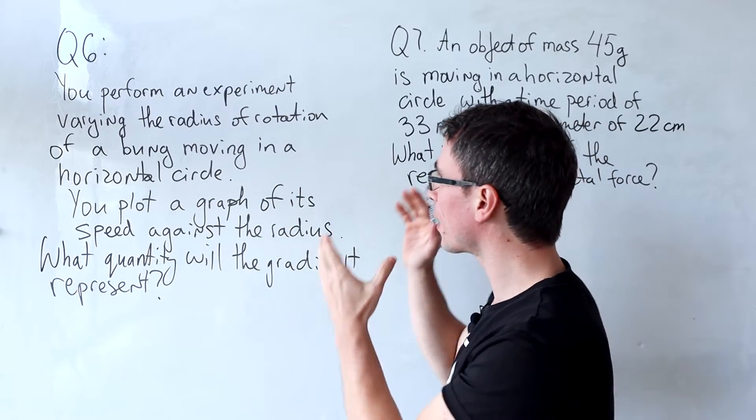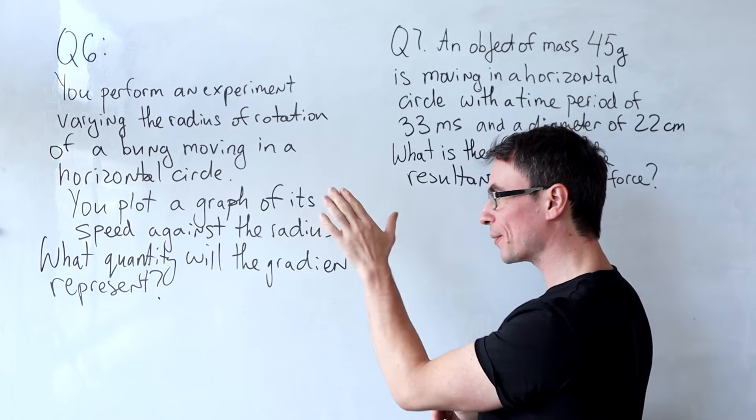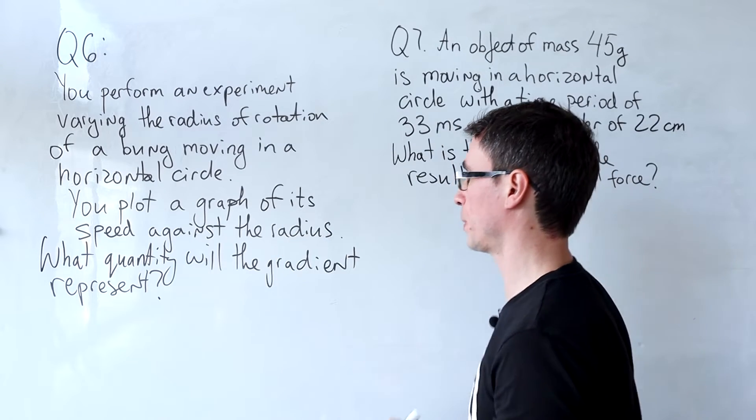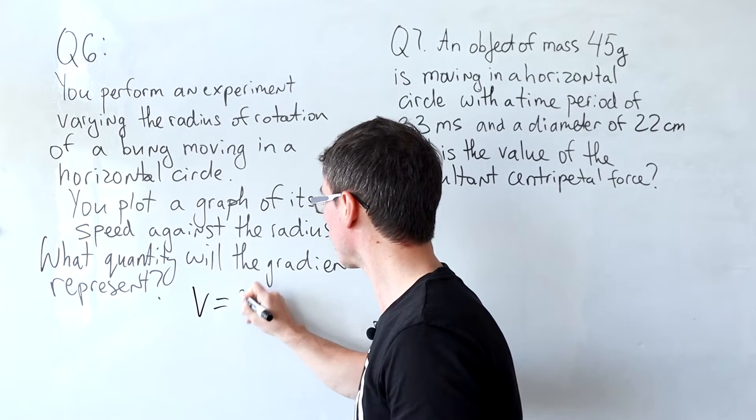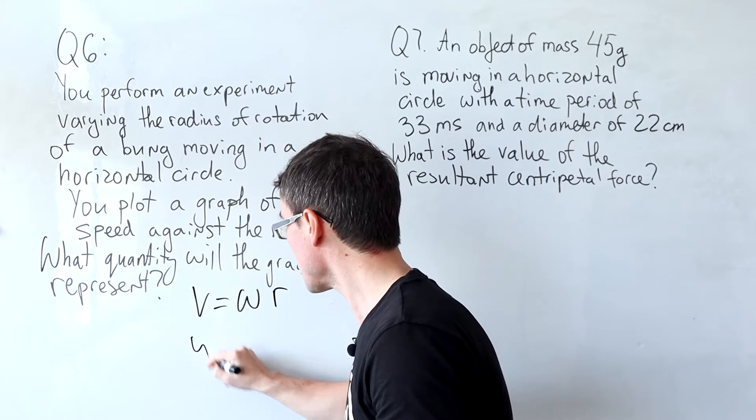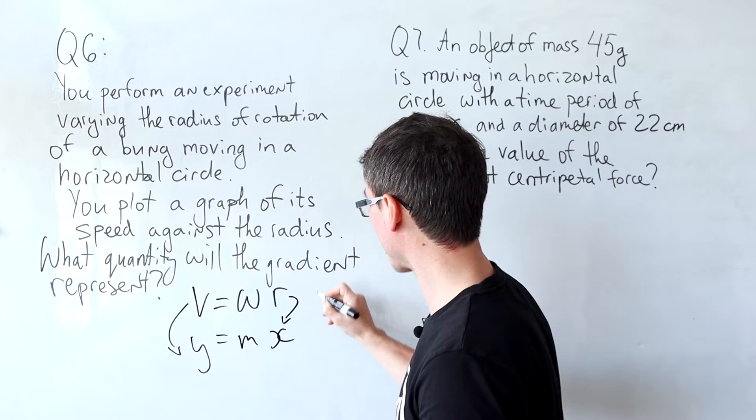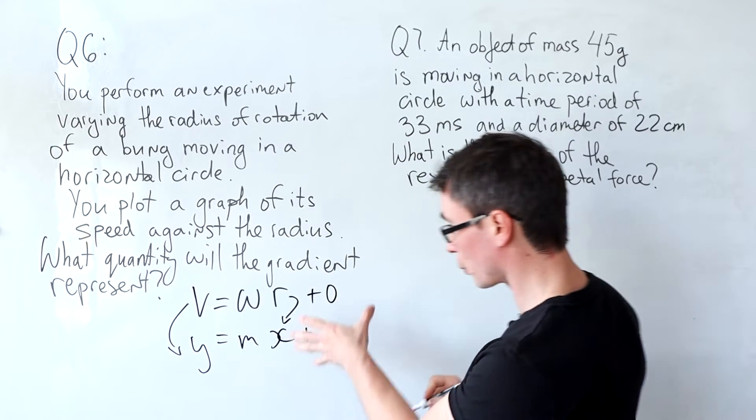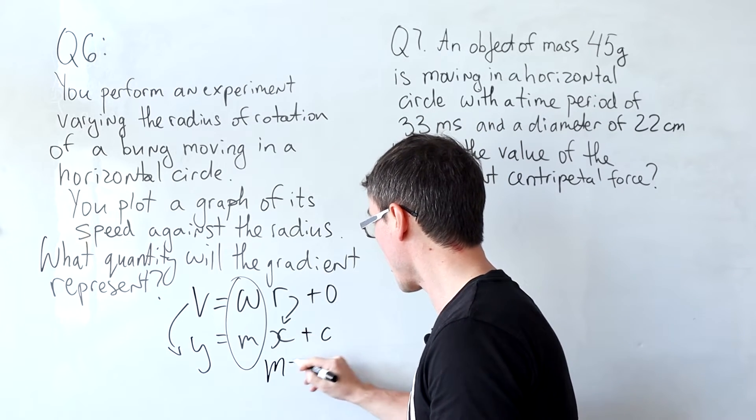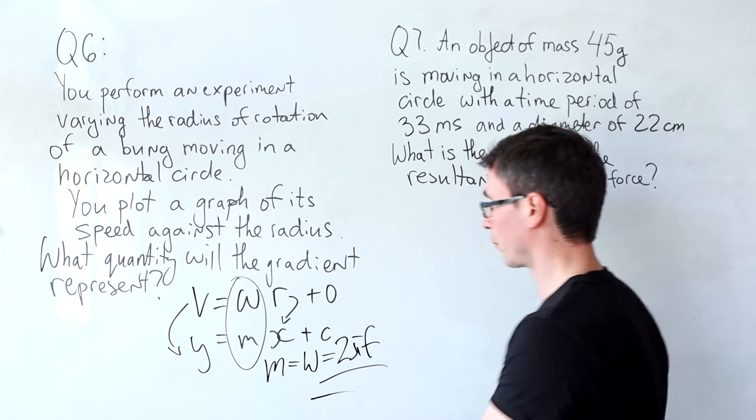Question six: we perform an experiment varying the radius of rotation of a bump moving in a horizontal circle. We plot a graph of its speed against the radius. What quantity will the gradient represent? Well we know that v equals omega the angular velocity multiplied by the radius. If v is on the y-axis and r is on the x-axis what we're going to have is a straight line through the origin and our gradient is omega, which is also equal to 2π times the frequency.